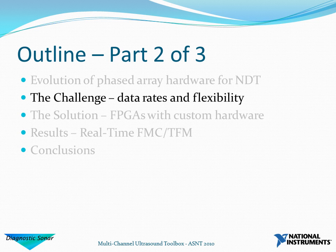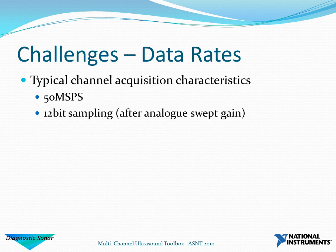So let's see where we go for the next generation of equipment, and in particular the challenges that we're going to address. The first one is data rates. A typical channel would have characteristics of 50 Mbps, which is quite common. We want to apply swept gain in the analog region and then digitize it, and if we do 12-bit sampling on this, it leads to very high data rates.